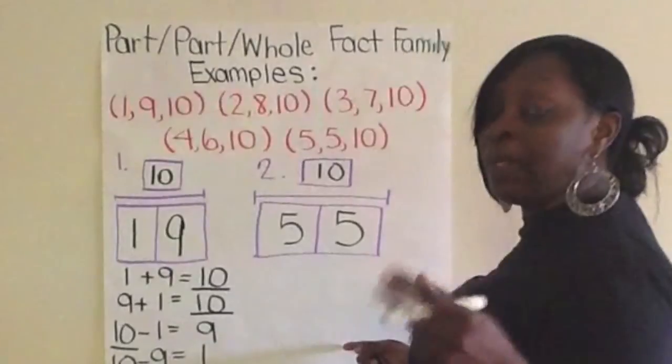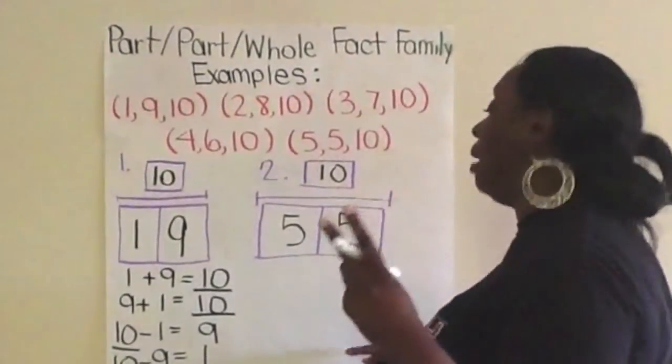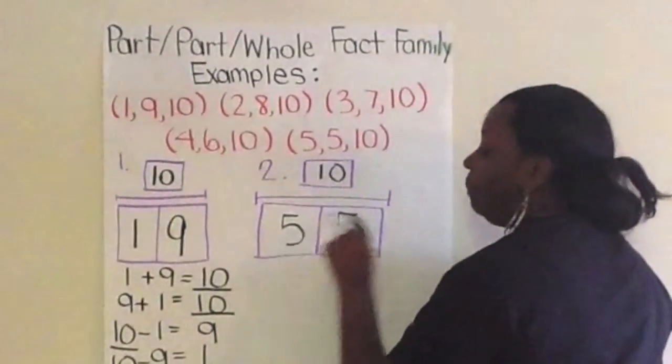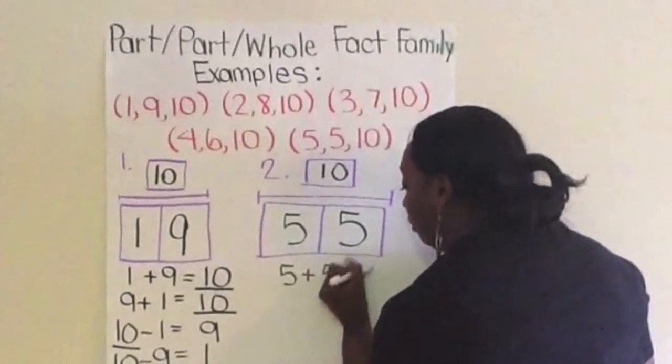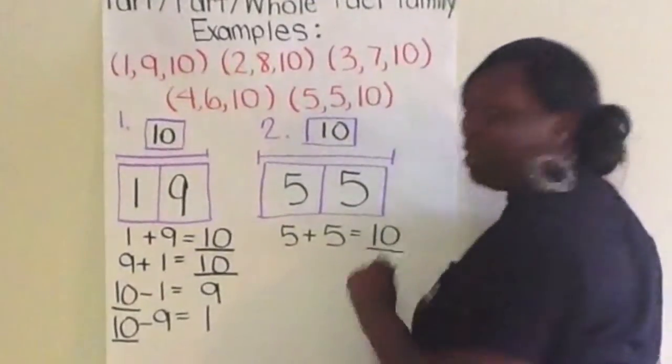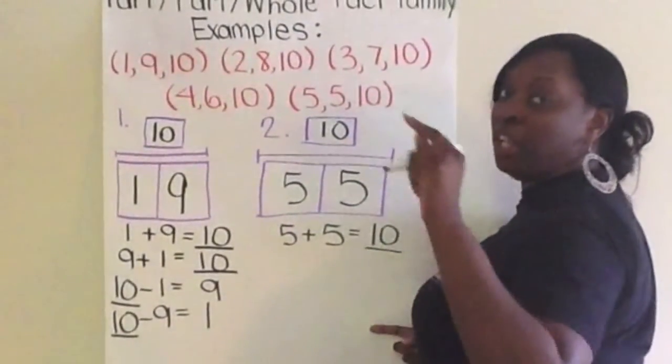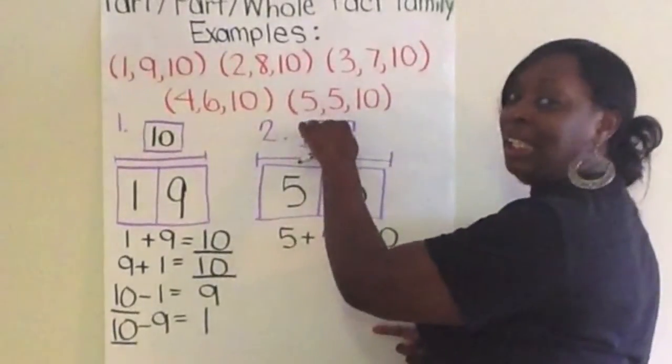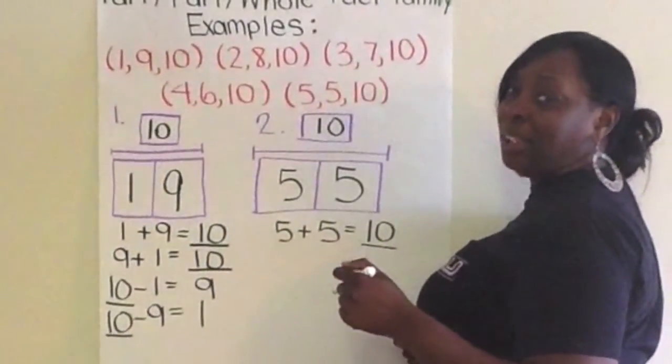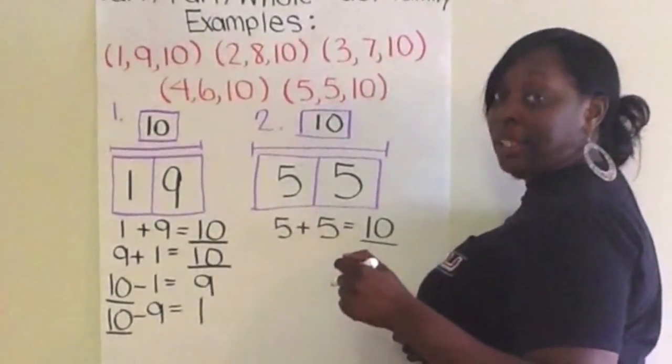Anytime you have a double, it's going to be just a little different because you only have two related problems. The first one, 5 plus 5 equals 10. The reason you only have two related problems, because if you turn that around, isn't it just the same thing? 5 plus 5 equals 10. So, you don't really have to write it twice.